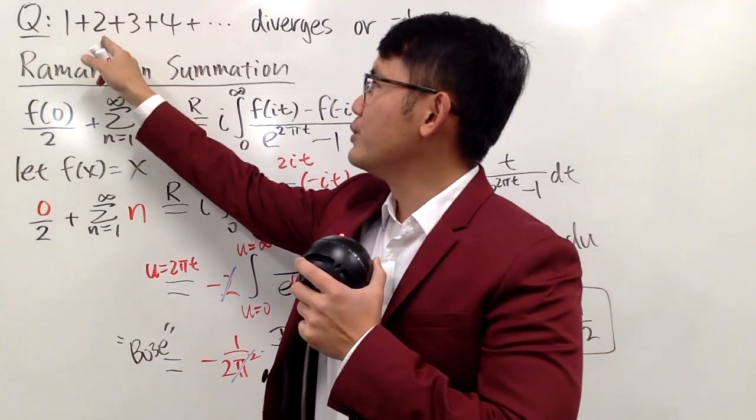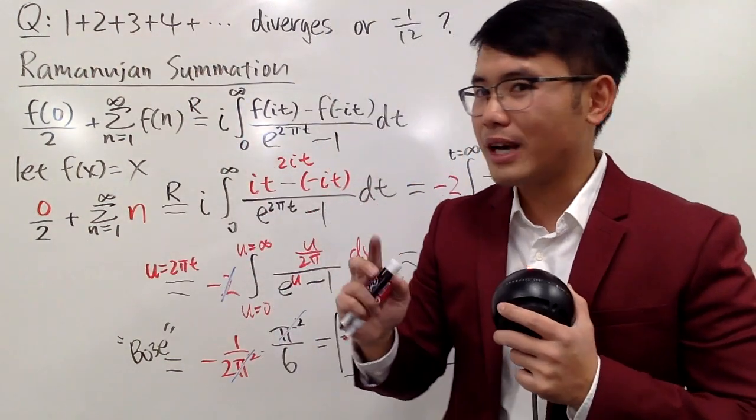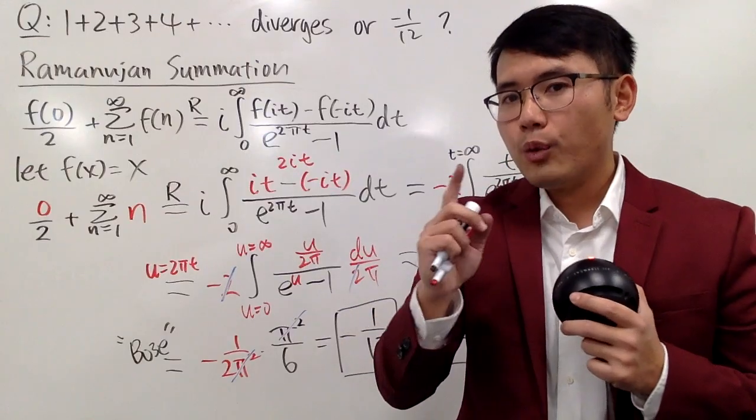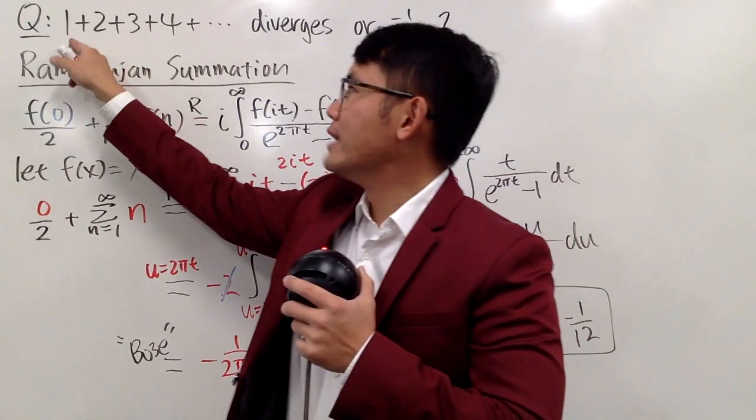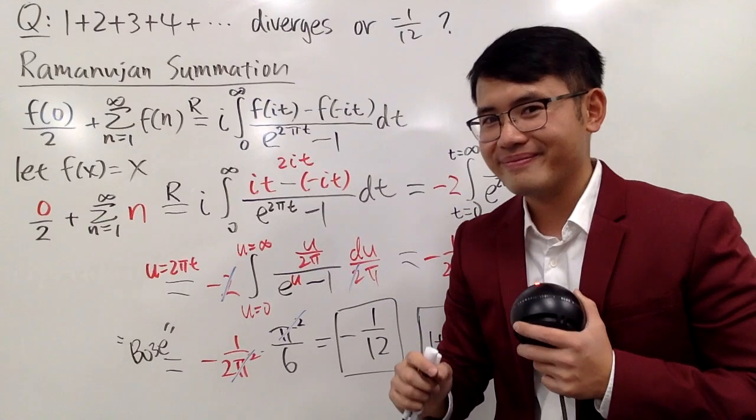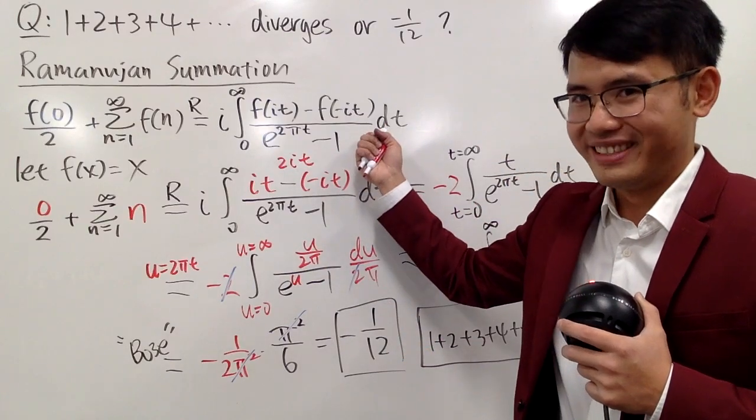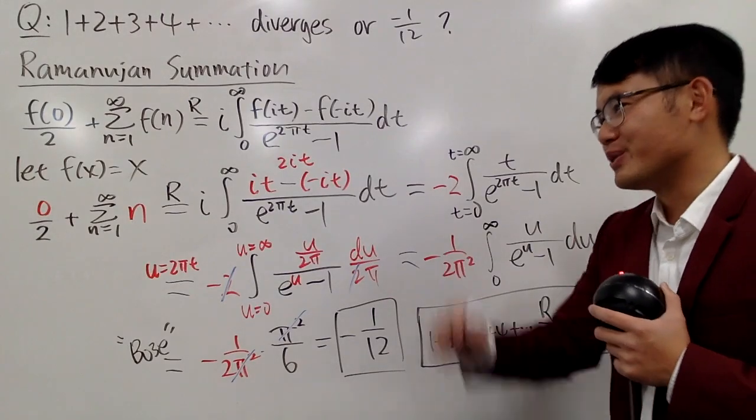Yes, you have 1 plus 2 plus 3 plus 4 plus dot dot dot. From here, you can actually do a few more things. What will be the value for 1 squared plus 2 squared plus 3 squared plus 4 squared and so on? That will be 0. How do you do it? Use this. You can check that out. Just do it on your own also.